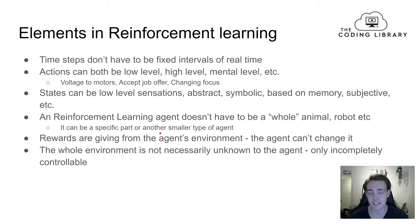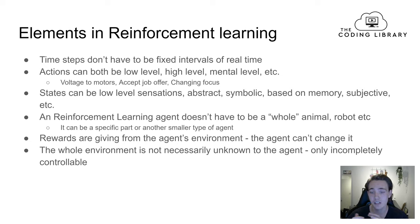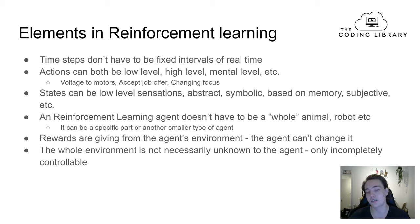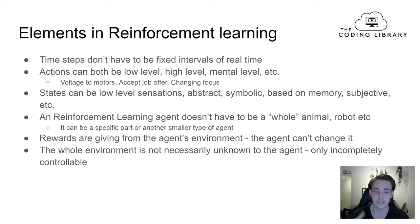We really define our states, actions, and time steps ourselves in reinforcement learning. A reinforcement learning agent doesn't have to be a whole animal or robot — it can be a specific part like a robot arm, the head, or only the legs. It can also be a computer game or a computer trying to learn something. We define our reinforcement learning agent ourselves, which makes reinforcement learning such a cool feature — you can do almost everything you want with an agent placed in some environment trying to maximize reward.